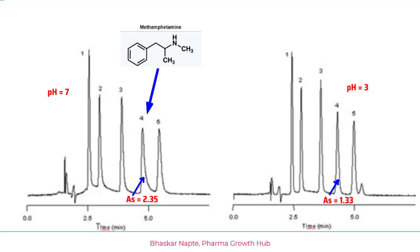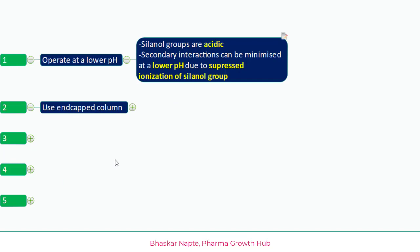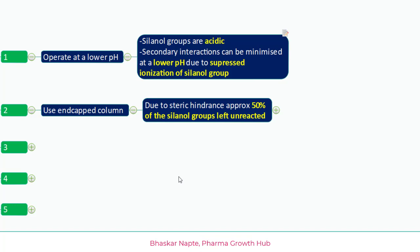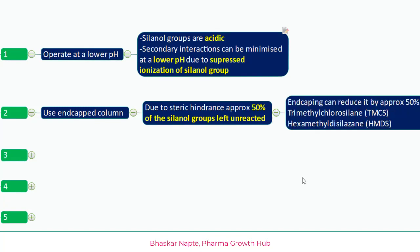The second solution is to use an end-capped column. The reason for secondary interaction is the availability of unreacted silanol groups, and these silanols are available because of steric hindrance — your C8 or C18 chains cannot replace 100% of the silanol groups, so approximately 50% remain unreacted on the stationary phase. Since C8 or C18 are bulky molecules, they cannot react with all silanol groups.